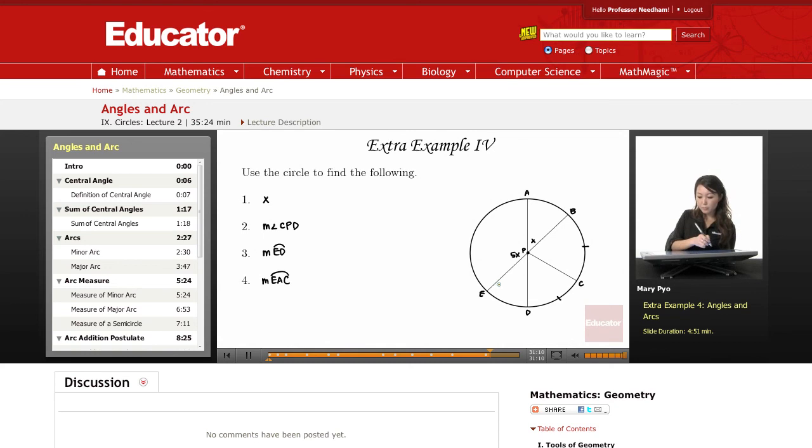Okay, so here, how do we find x? Well, this one right here, our angle BAE is 180 degrees because it's a semicircle. So I can just take this x, add it to 5x, and make that equal to 180. So 5x plus x equals 180, 6x equals 180. Divide by 6, x is equal to 30.